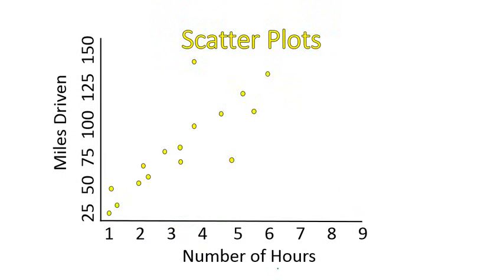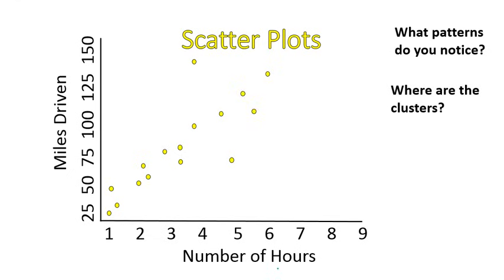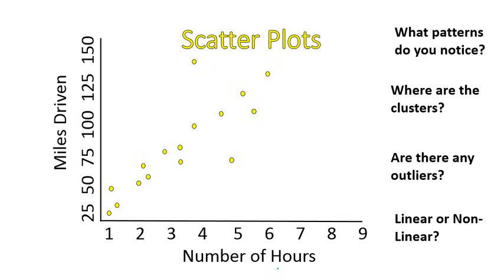Here's an example of a linear correlation. This is miles driven versus the number of hours of driving. What patterns do you notice? Where are the clusters? Are there any outliers? And is this linear or non-linear? I'm going to show that it is linear by drawing a line of best fit. A line of best fit goes right about the middle, showing about the same above and below, trying to hit as many points as possible.